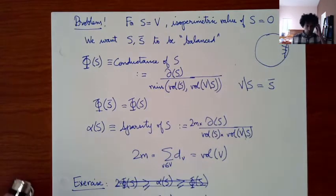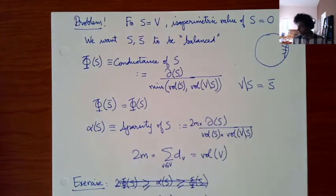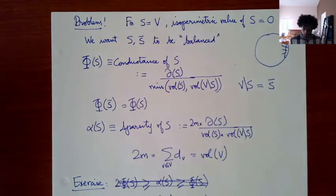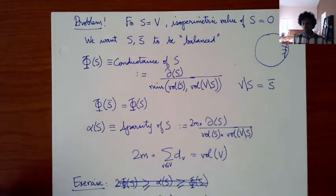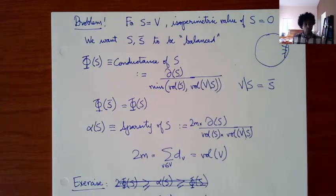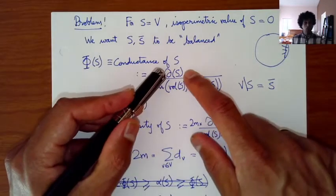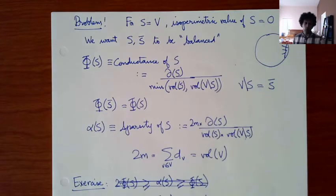Today is going to be part two of the lecture on conductance. Specifically, we're going to prove a very well known result called the Cheeger inequality, which characterizes and gives a bound on the minimum conductance of a graph in terms of the eigenvalues of the normalized Laplacian. Before getting into the Cheeger inequality, let me do a quick summary of what we did last time.